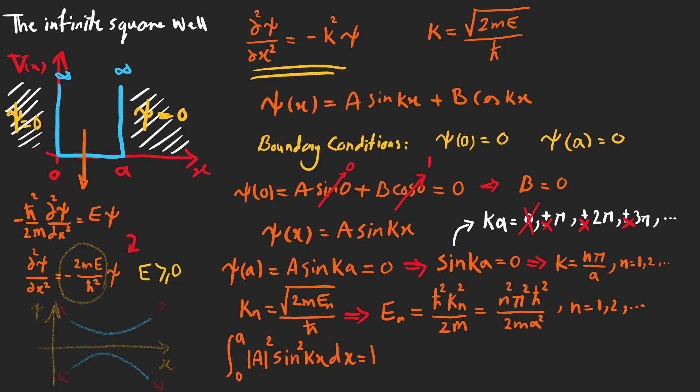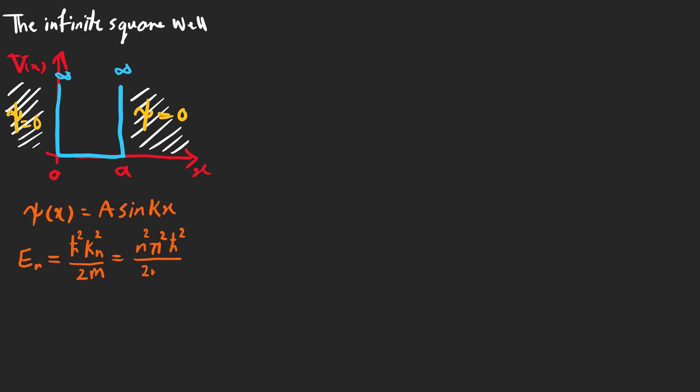To find A we need to use the normalization condition which yields square root of 2 over a. So far we have found energy levels, A, and k. The time-independent wave equation is given by this expression.